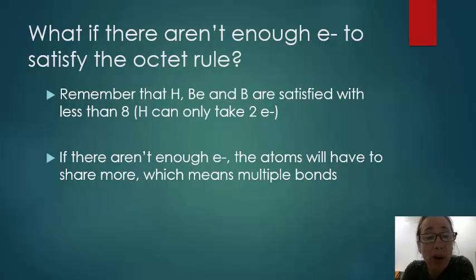What should you do if there aren't enough electrons to satisfy the octet rule? Well, remember that hydrogen, beryllium, and boron are satisfied with less than eight. And hydrogen can only take two. So if you've taken that into consideration and you still don't have enough, that means the atoms are going to have to share their electrons even more, which means you're going to have to use multiple bonds. And we'll look at that in a different video.